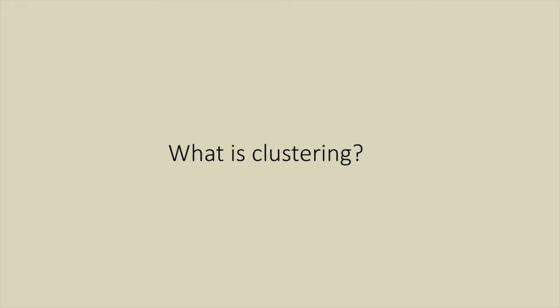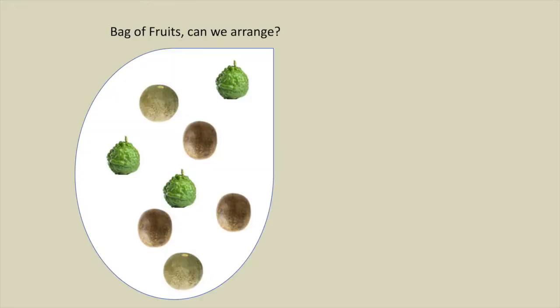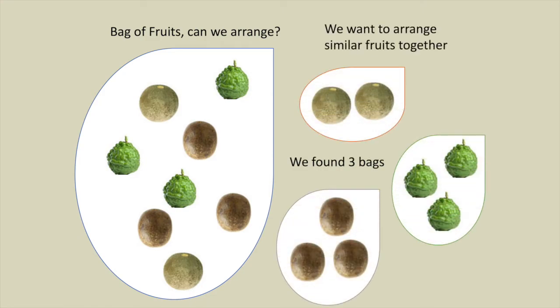Now let us see what is clustering with the help of an example. If a bag of fruits given to us which are not so familiar, we can't do classification. However, can we arrange? As you can see we found three distinct bags representing three clusters. This process is basically known as clustering.